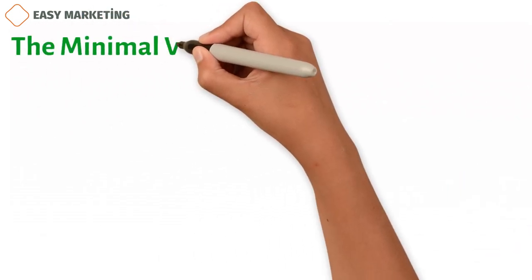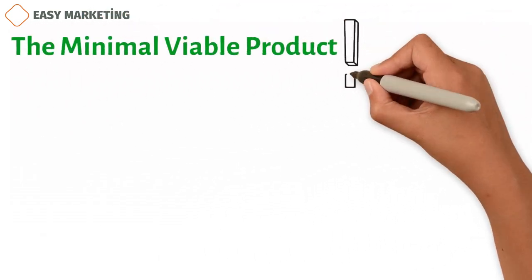The minimal viable product is one of the most important parts of the lean method, MVP. If you understand the MVP idea, you can save time and spend more time on the things that matter most.